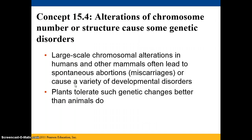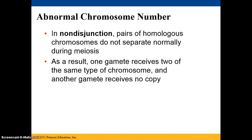If we alter a chromosome number or structure, we can get some genetic disorders, as we discussed in the karyotype lab. Large-scale chromosomal alterations in humans and other mammals often lead to spontaneous abortions — miscarriages — or cause a variety of developmental disorders. In fact, 50% of all fertilizations end in spontaneous abortions. Plants, however, are much better at dealing with genetic changes to chromosome number or structure than animals.